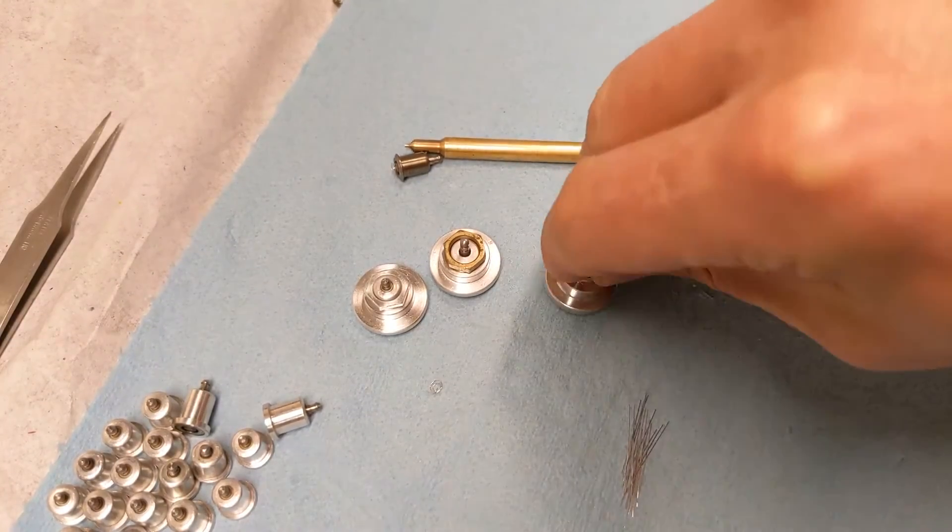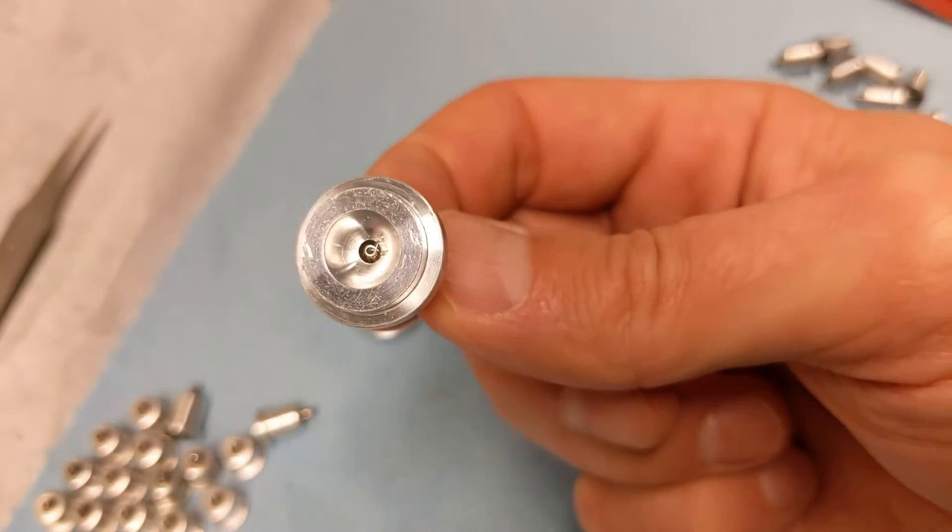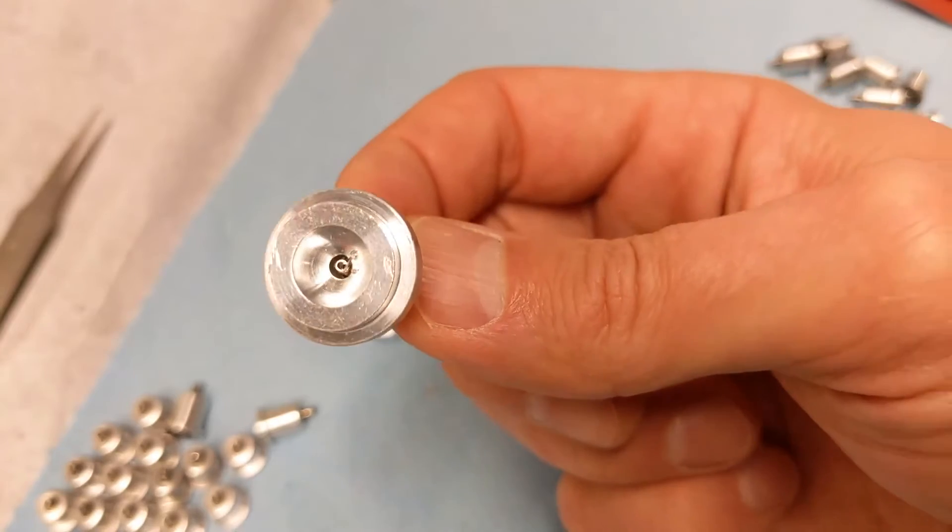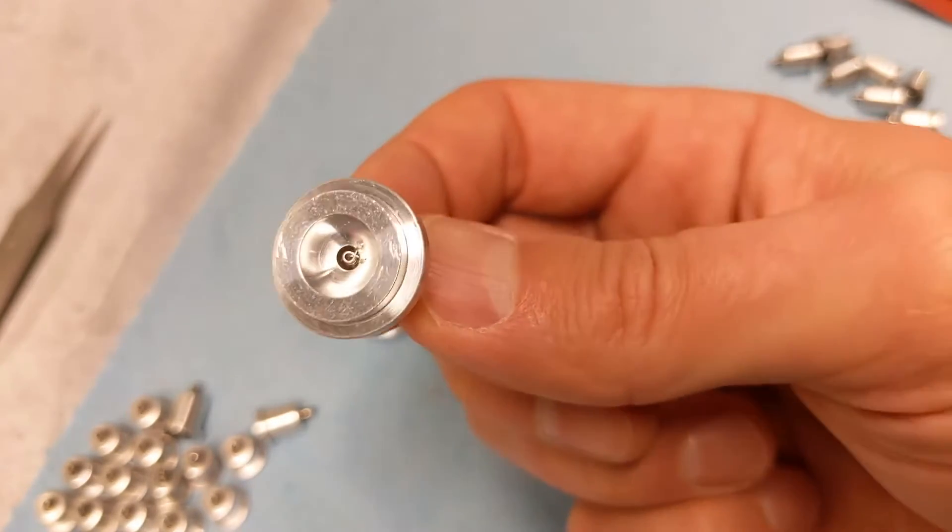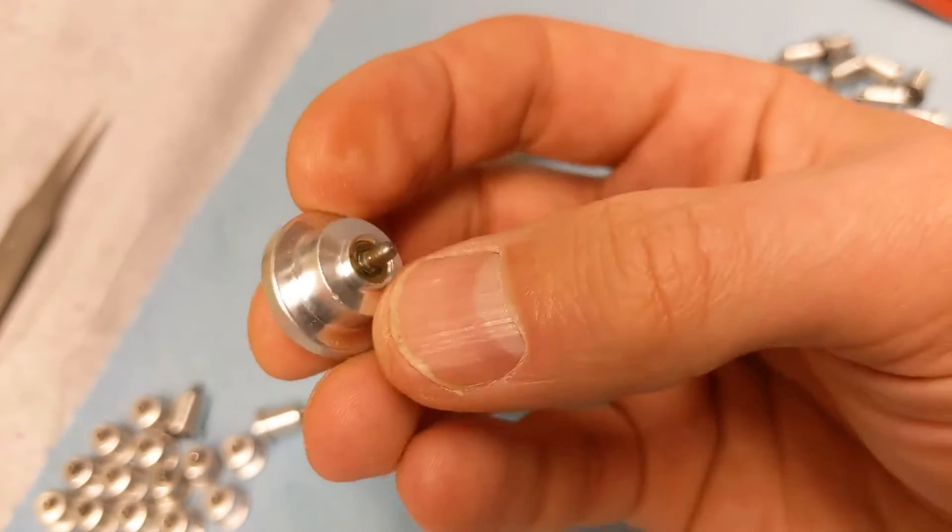Sometimes the plug is integral with the head of the engine, like shown here. This is the Irvin glow head, where, as you can see, the combustion chamber, the engine head, and the plug are all one piece.